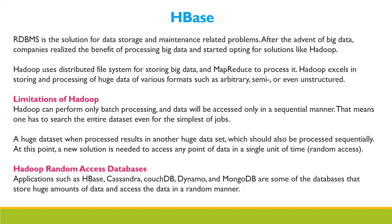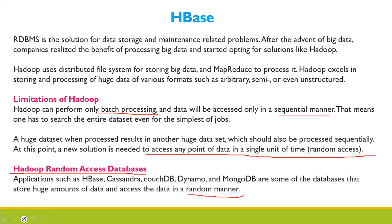However, Hadoop has limitations and disadvantages. Hadoop can perform only batch processing, and data can be accessed only in a sequential manner. To access any point of data in a single unit of time — random access — you need a Hadoop random access database. Examples include HBase, Cassandra, CouchDB, Dynamo, and MongoDB. These databases store huge amounts of data and access data in a random manner.